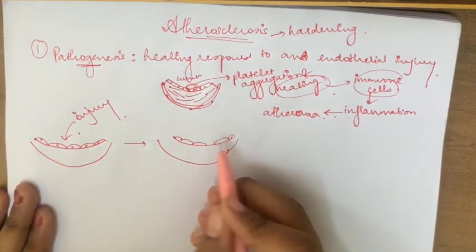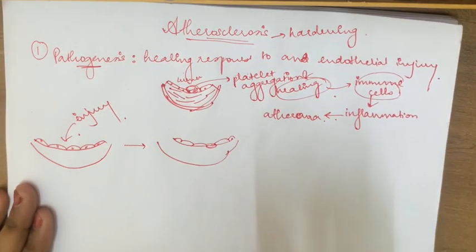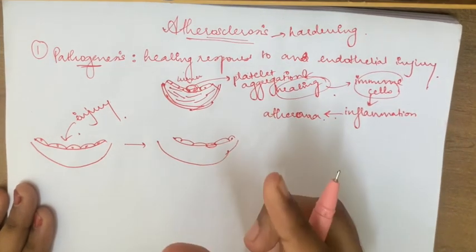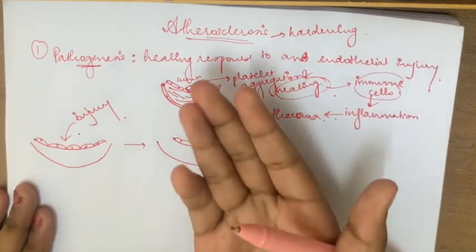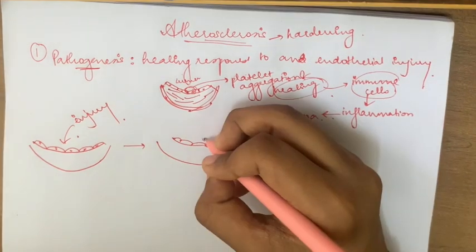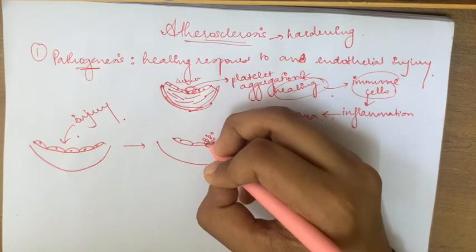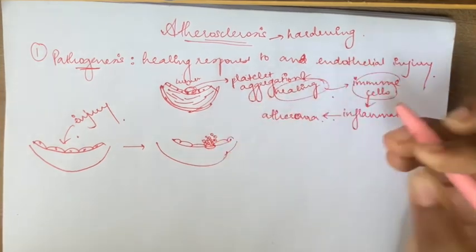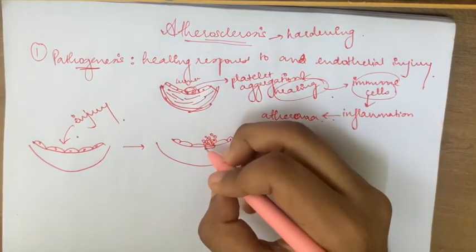So in that scenario, there is vasodilation. The space between each endothelial cell increases. That leads to increased permeability of this particular vessel. You have platelets here, and since platelets are accumulating here, and as I told you, immune cells are also involved, you have monocytes.